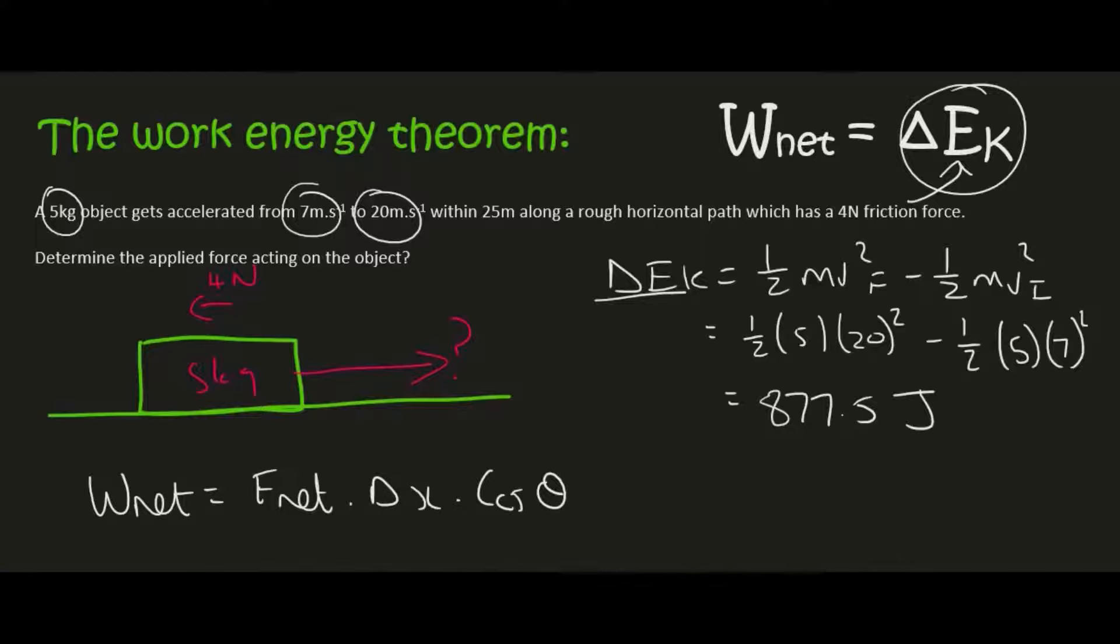So now we know that, for example let me show you one technique. We know W_net is equal to F_net change in x cos theta. And we know that that's equal to the change in E_K which is 877.5. And so we could leave F_net as it is if we want to. The distance is going to be 25 meters.